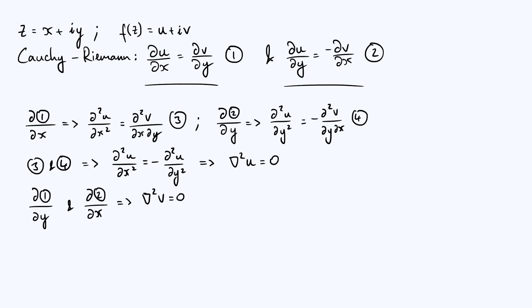So u and v independently have to satisfy Laplace's equation. Now, this is useful because if we know that a particular complex function is analytic, we just write down its real and imaginary parts, and we automatically have two different solutions to Laplace's equation. And that's a good thing because Laplace's equation turns up all over the place in physics. But for example, in electrostatics, if you have a region where there are no charges, then the electrostatic potential has to satisfy Laplace's equation.